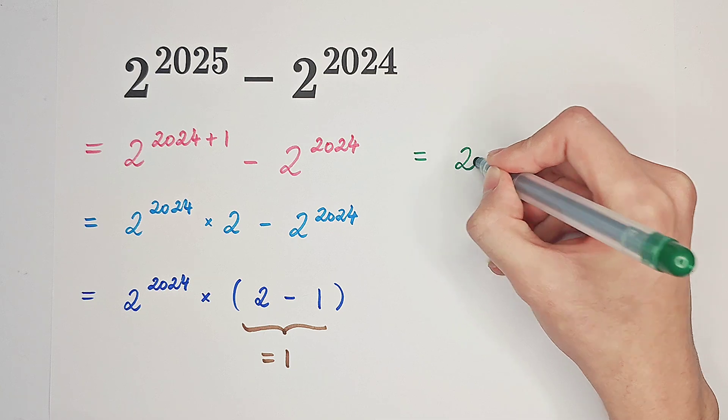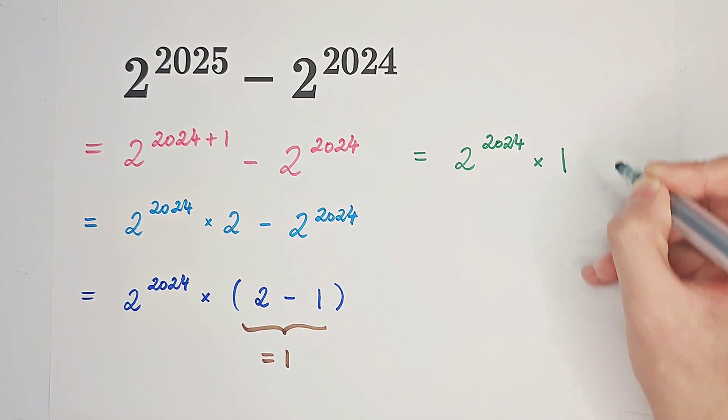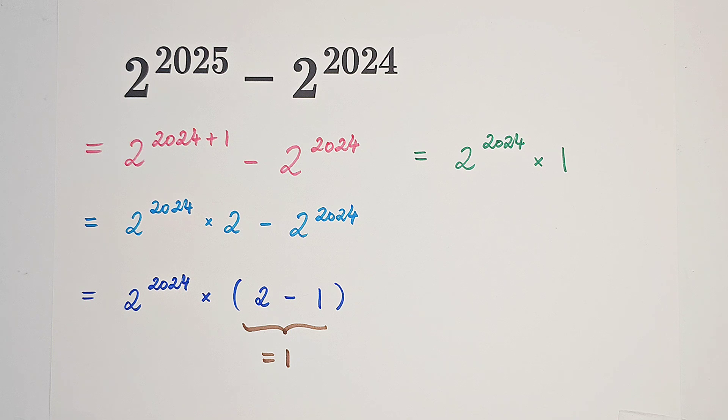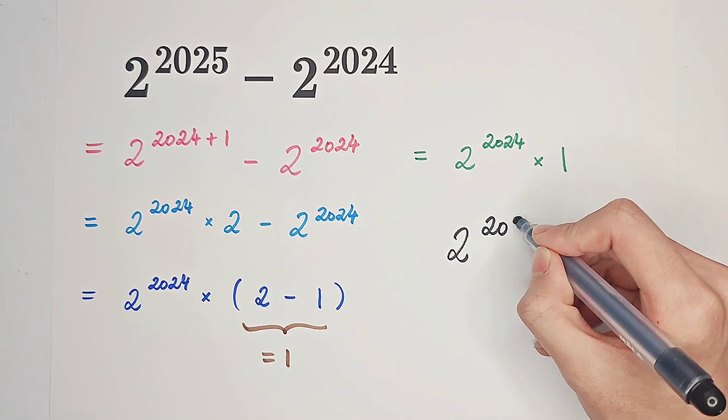So the whole thing is just equal to 2 to the power of 2024 times 1. And everything times 1 is just itself. So the answer is 2 to the power of 2024.